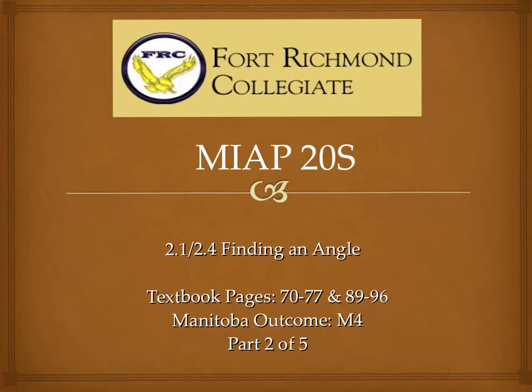Hi, welcome to MIAP 20S videos. This is part 2 of 5 for Outcome M4, which deals with trigonometry. In this video, we're going to look at part of chapter 2.1 and 2.4. We're just going to be looking at the finding an angle portion. So I'm going to do a few examples, and then I'm going to give you a couple of examples that you can try.